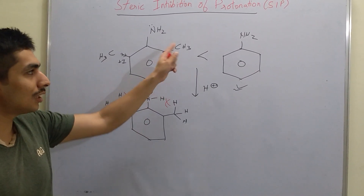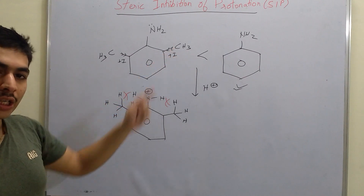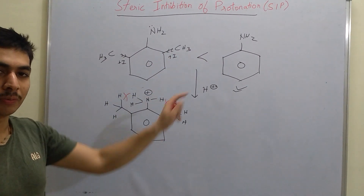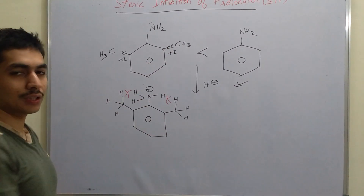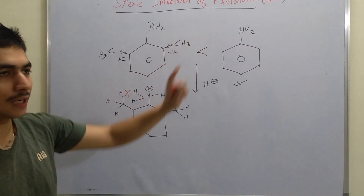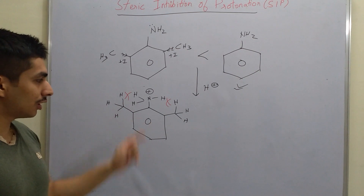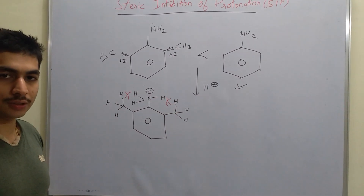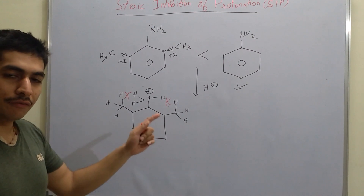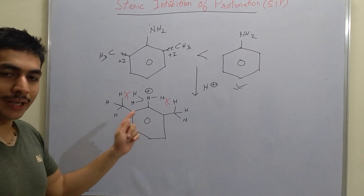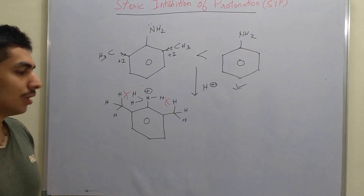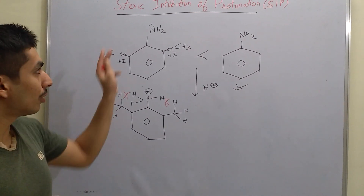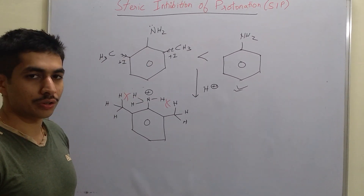Similarly, if we only had one methyl group at the ortho position, even in that case, aniline's NH₂ would be faster to protonate. Even with one ortho methyl group, aniline will still be more basic, because even then the steric repulsions would have made the conjugate acid unstable. So this is the whole concept of Steric Inhibition of Protonation.